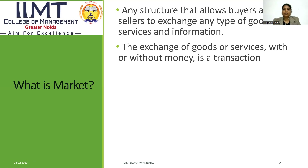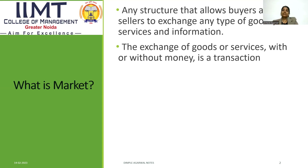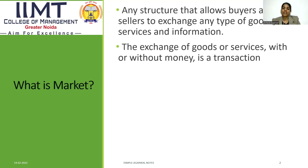There are two things: the first is exchange and the second is transaction. When the exchange of goods and services happen with money, it is known as transaction. Market structure is also the structure that allows buyers and sellers to exchange any type of goods, services, and information. We can exchange these goods and services with the help of money, then it will convert into a transaction.